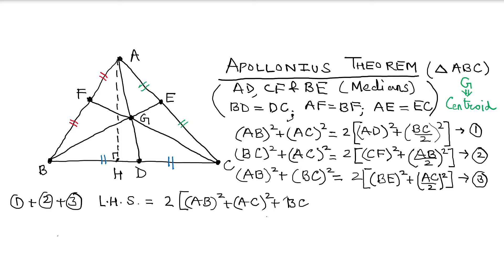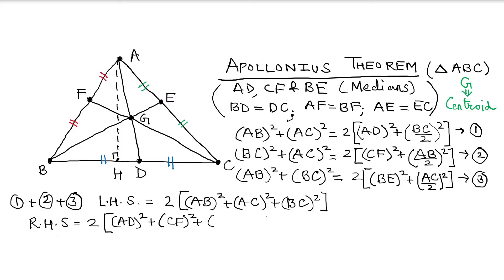And what are we going to get on the right-hand side? We need to articulate that as well. Once we articulate the right-hand side, we see that 2 is something that could be taken common. Then we get the sum of the squares of the three medians, along with one-fourth of the sum of the squares of the three sides.